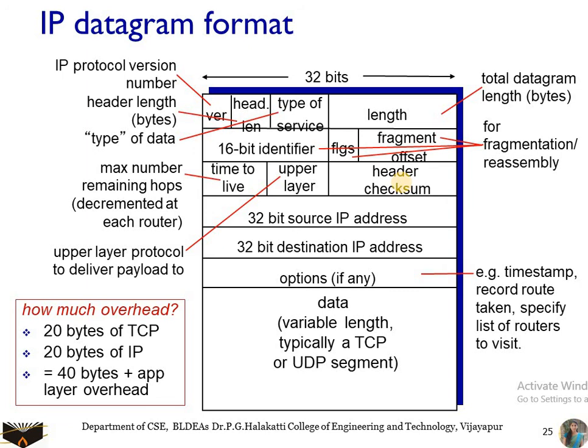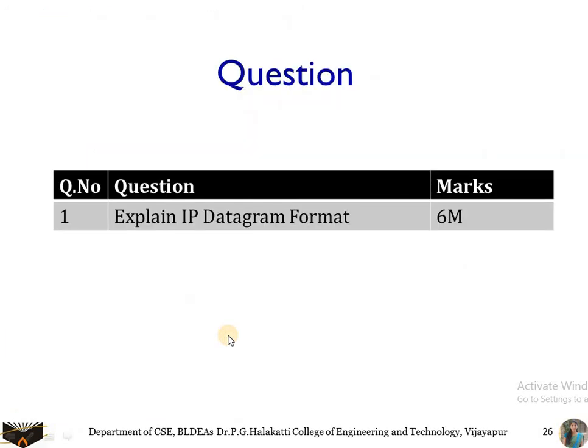Finally, we have the data or payload field. This is the most important field — the data field of the IP datagram contains the transport layer segments, either TCP or UDP segments, which need to be delivered to the destination. An IP datagram has a total of 20 bytes of header. If the datagram carries TCP segments, each datagram carries 40 bytes of header total — 20 bytes for IP and 20 bytes for TCP — carried along with an application message.